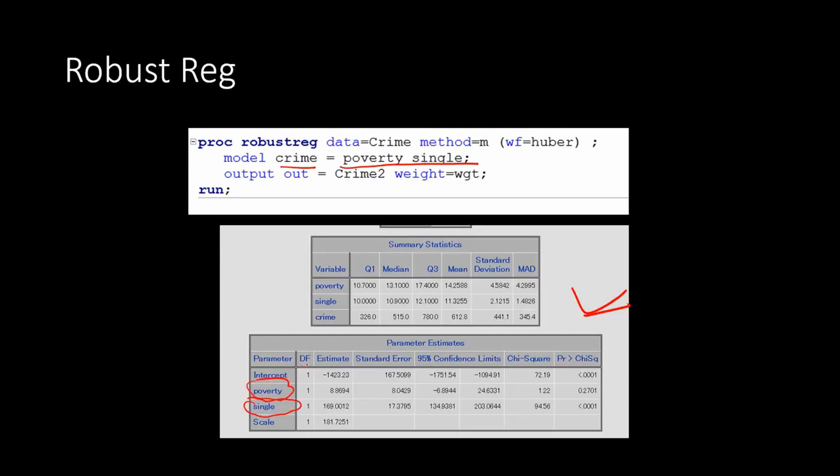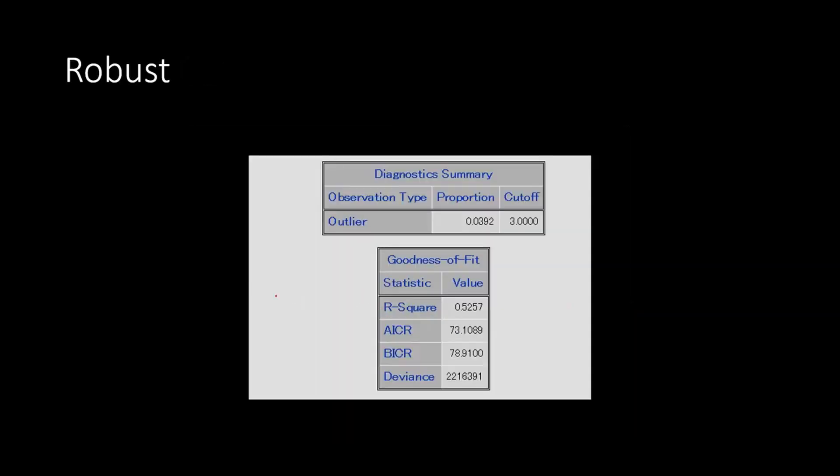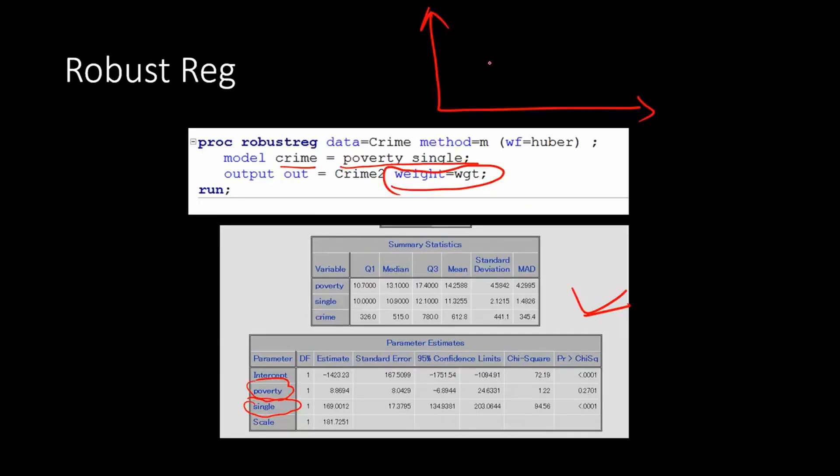So the result from OLS and robust say is pretty much the same. But what are the differences then? And we'll see what the differences are. So when you look at the statistics, the diagnostic statistics.